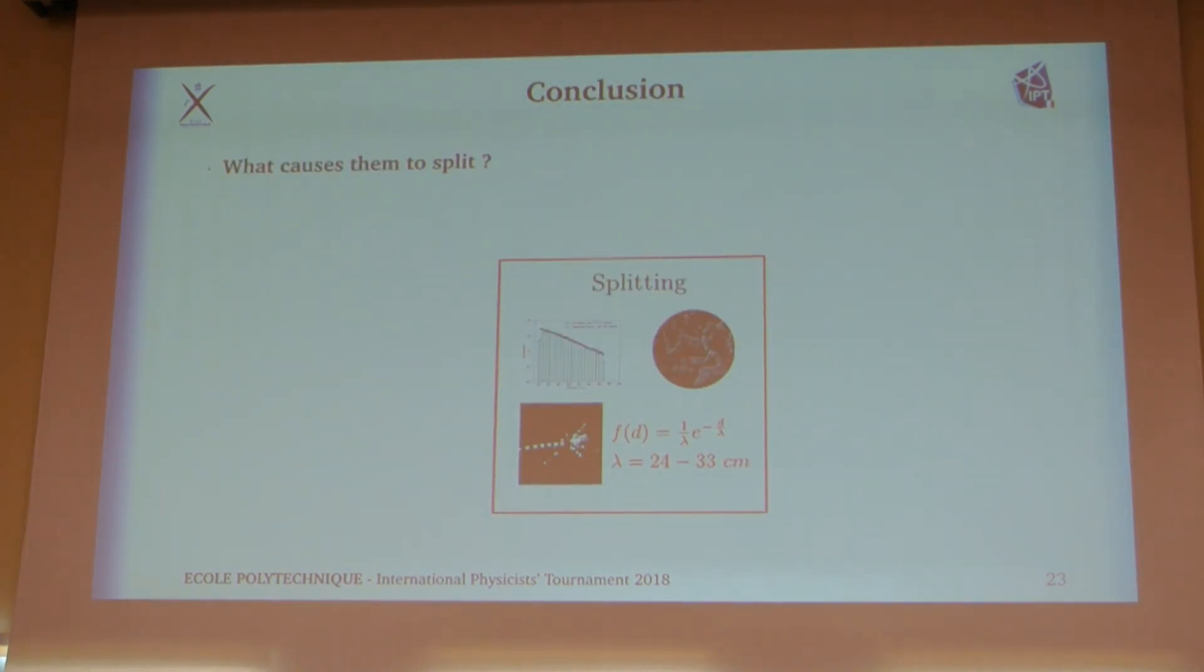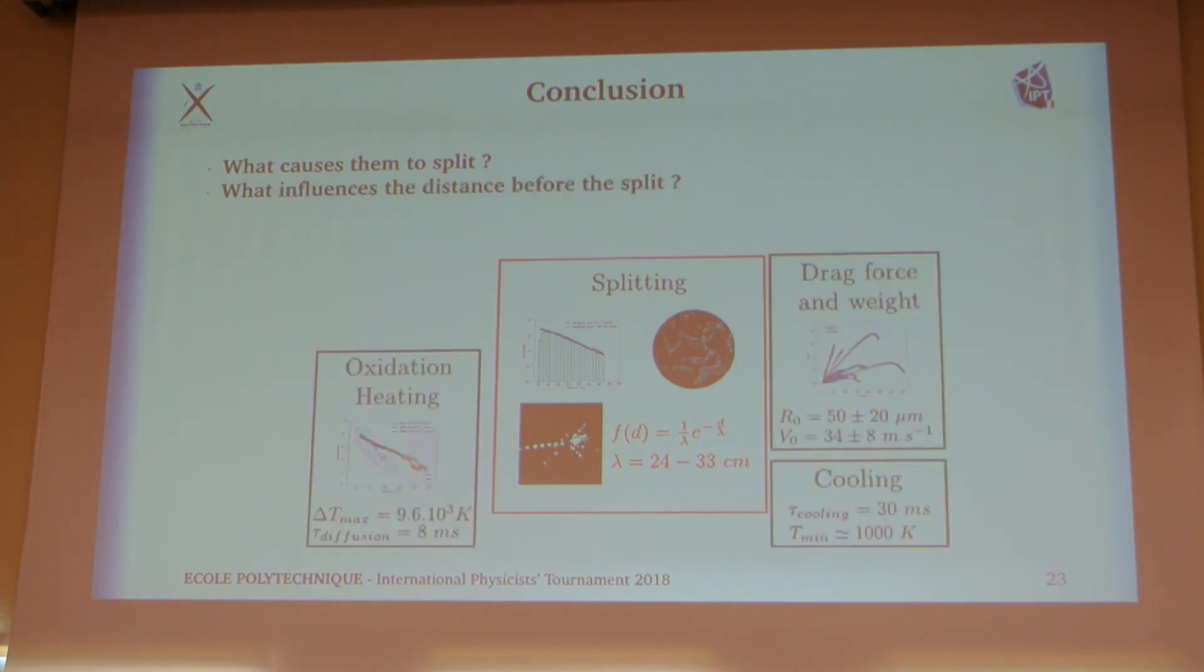To conclude, we have just explained what is the best hypothesis we think makes the sparks explode. We also speak a little bit about the physics of sparks to see what could influence the distance before they split. There is the force applied which makes them glow longer, which makes the distance longer. And also, various phenomena like the trajectory. We also measure the distribution of the sparks before explosion. Thank you for listening.